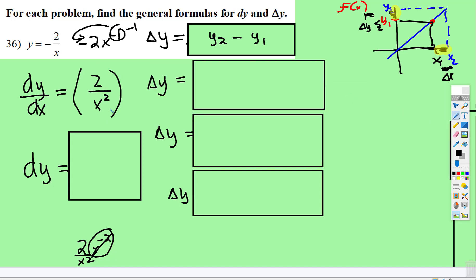So dy/dx becomes this, and then we're just going to multiply both sides by dx. Ta-da! So there's that. All right, so now the delta y.